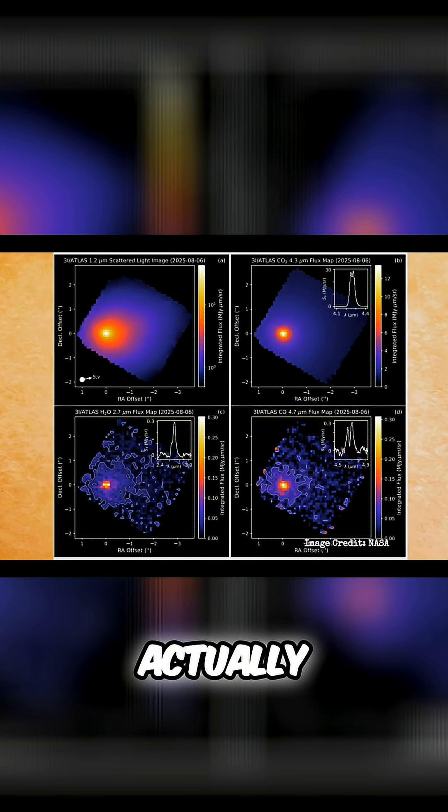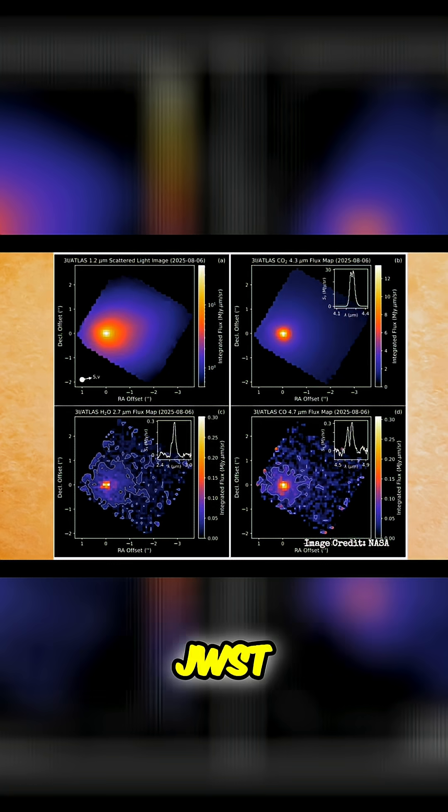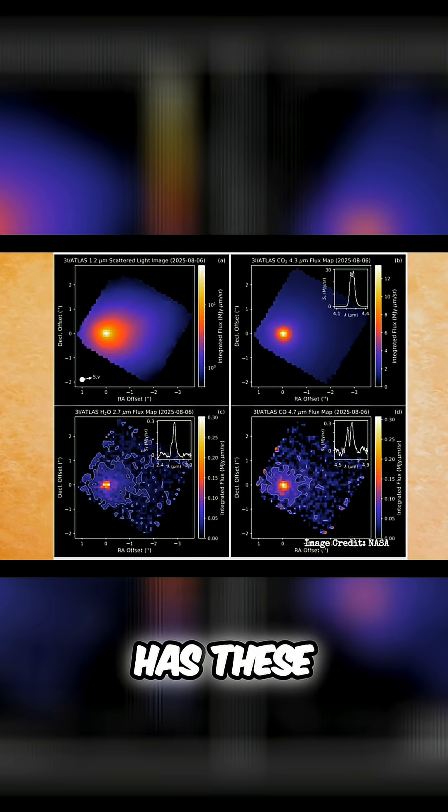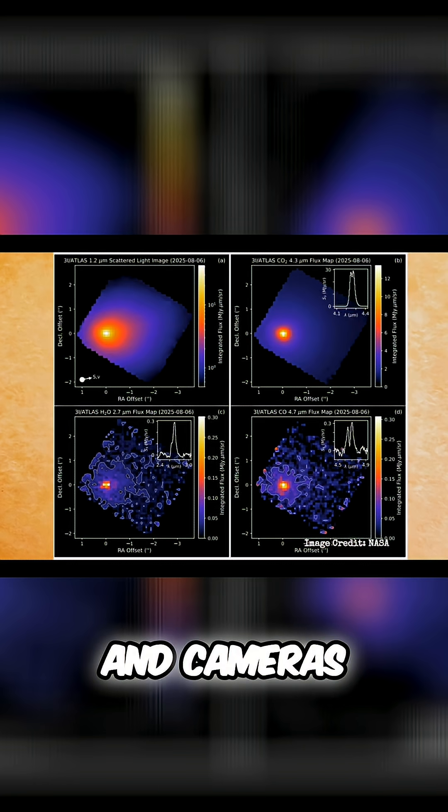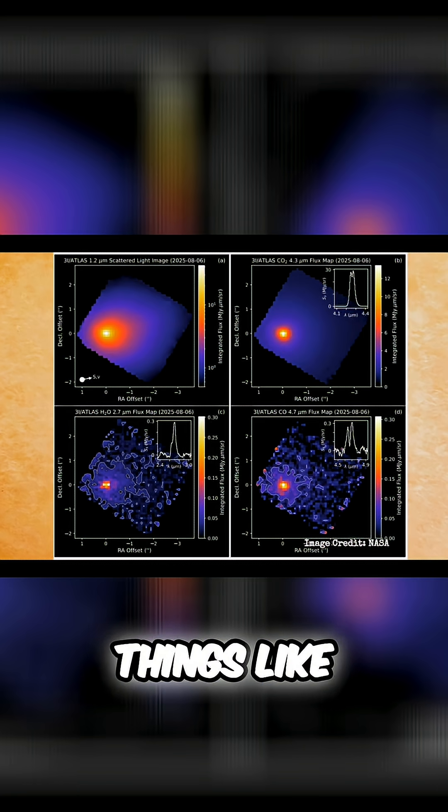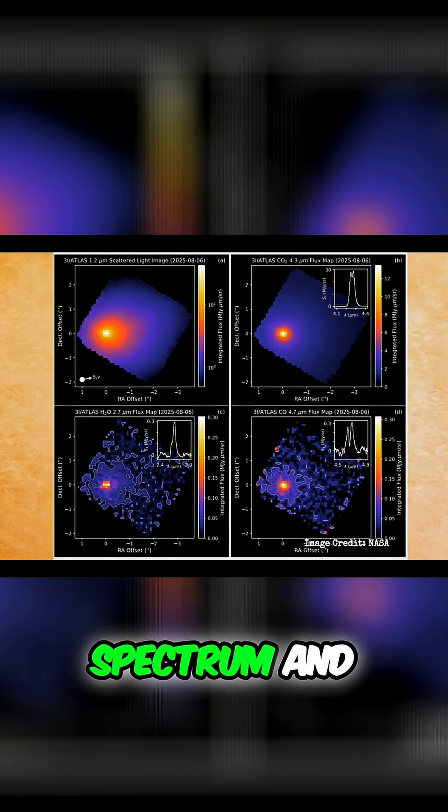But these images are actually from the JWST and the JWST has these spectral telescopes and cameras on it, so it can look at things like the infrared spectrum and all that.